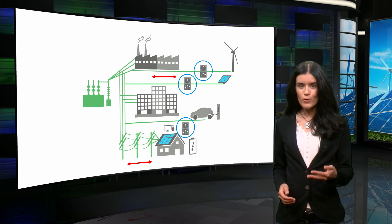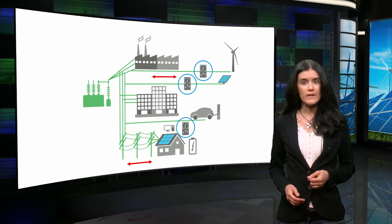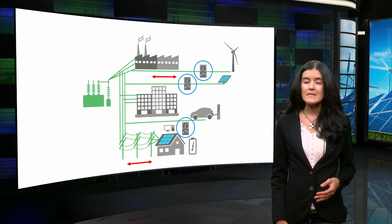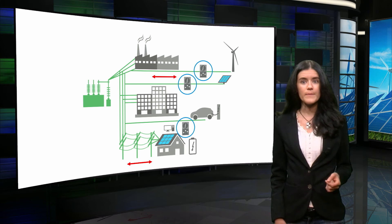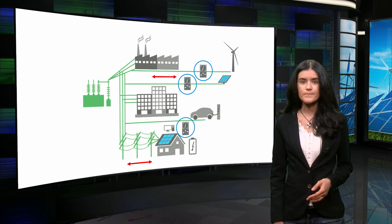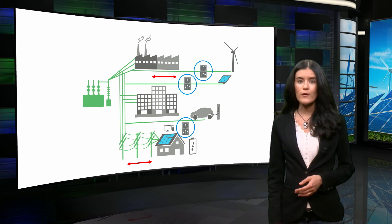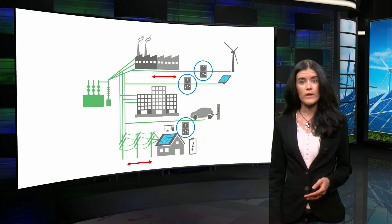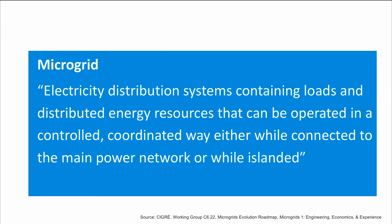Microgrids emerge as a response to the need for active distribution networks. Microgrids are regarded by many as the building blocks of the smart grid, particularly when referring to low voltage levels. The official definition of a microgrid, as given by the CIGRE working group, is the following: electricity distribution systems containing loads and distributed energy resources that can be operated in a controlled, coordinated way, either while connected to the main power network or while islanded.